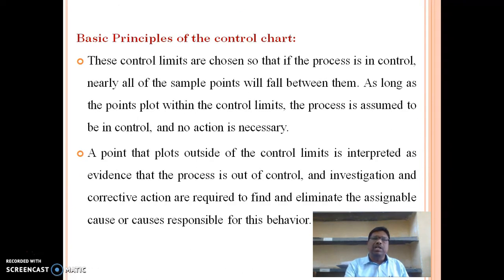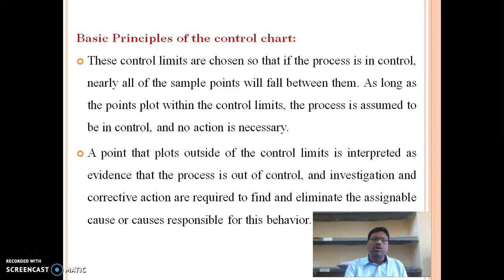Basic principles of the control chart: these control limits are chosen so that if the process is in control, nearly all the sample points will fall between them. As long as the points plot within the control limits, the process is assumed to be in control and no action is necessary. A point that plots outside the control limits is interpreted as evidence that the process is out of control, and investigation and corrective action are required to find and eliminate the assignable causes responsible for this behavior.